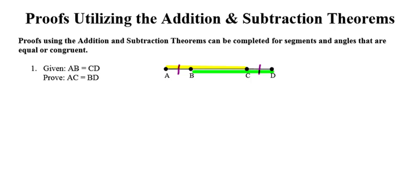When looking at this proof, we're starting with AB, which in our picture is a relatively small piece, and we're ending up at segment AC, which is considerably larger. So that's a clue that tells me I'm starting with something small and moving to something large — I'm definitely going to have to use some addition.